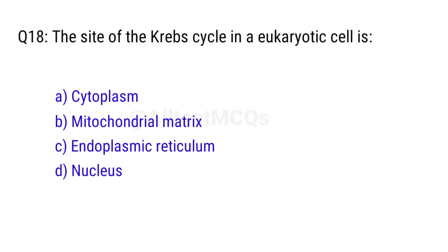Q18. The site of the Krebs cycle in a eukaryotic cell is? Right answer is option B, mitochondrial matrix.